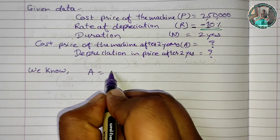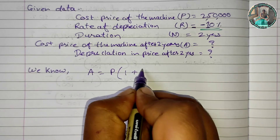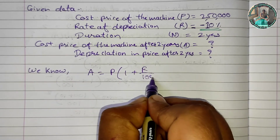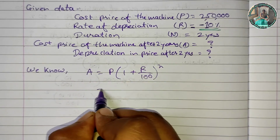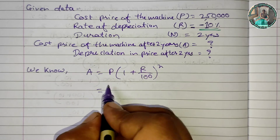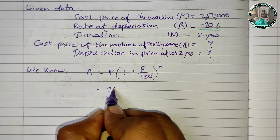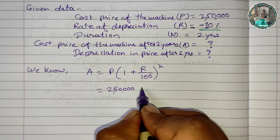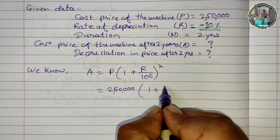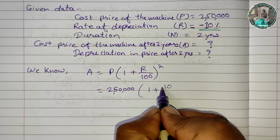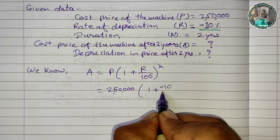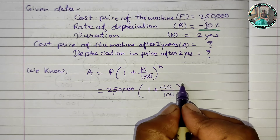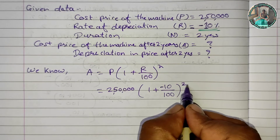We know: A = P × (1 + R/100) raised to N. For depreciation, we fill in: A = 2,50,000 × (1 + (-10)/100) raised to 2 years.